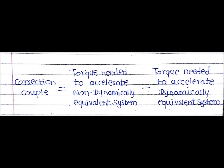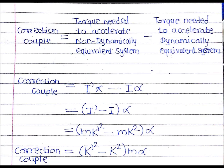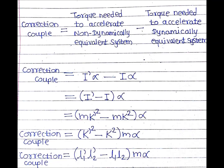The correction couple is the difference in torques: the torque needed to accelerate the non-dynamically equivalent system minus the torque needed to accelerate the dynamically equivalent system. Just as force equals mass times acceleration in a linear system, torque equals I times alpha in a rotary system. When the correction couple is applied to the non-dynamically equivalent system, that system will then behave the same as the dynamically equivalent system.